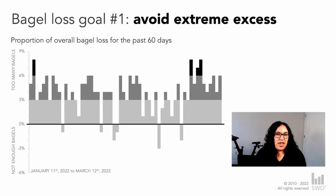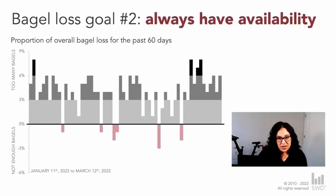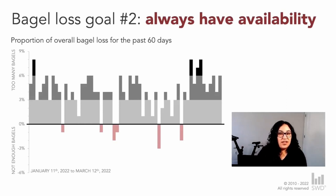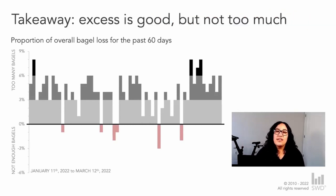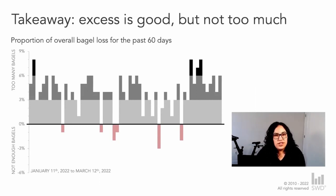The second goal we have to manage is always having availability. Feedback results have shown us that the number one cause of consumer dissatisfaction — both at the retailer and customer level — is lack of availability. So we try to avoid this at all costs, making sure our bagel products are always available for consumers who want to purchase them. This means we never want to have a negative loss day, or if you're looking at the visual in front of you, we never want to be in the red. The main takeaway: excess is good, but not too much — and this is a challenging balance to achieve.